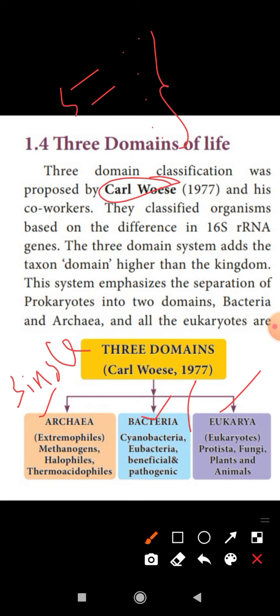Another group is the methanogens. These organisms live in and produce methane. Then there are halophiles — organisms that live in high-salinity, very salty environments. 'Halo' means salt, so halophiles are organisms adapted to high salt conditions.